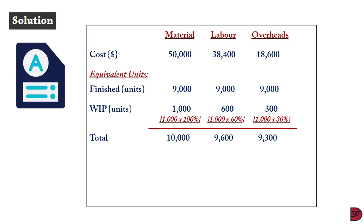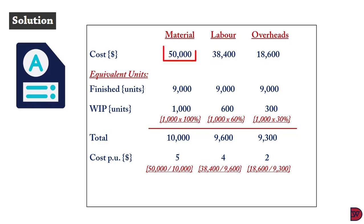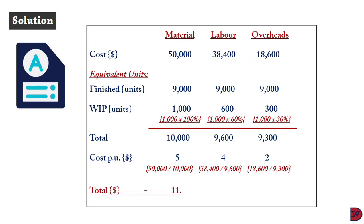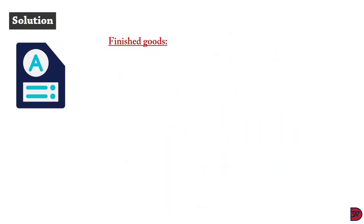The total equivalent units are: material — 10,000, labor — 9,600, overheads — 9,300. Calculating cost per unit: material is $50,000 ÷ 10,000 = $5; labor is $38,400 ÷ 9,600 = $4; overheads is $18,600 ÷ 9,300 = $2. The total cost per unit is $11, that is $5 + $4 + $2.